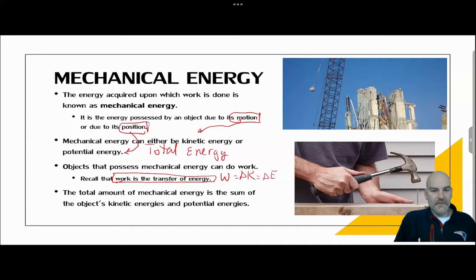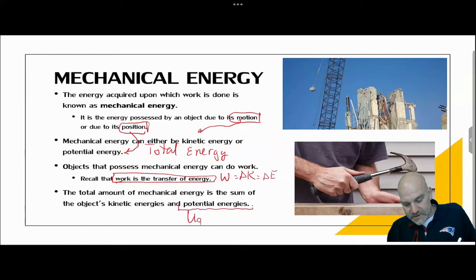So mechanical energy is simply the sum of the object's kinetic energies and its potential energies. So right now we've talked about two potential energies, gravitational and spring.